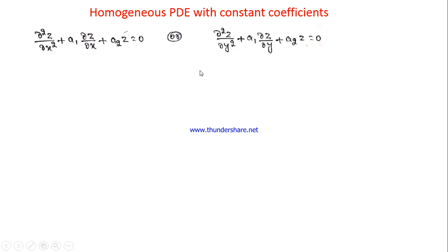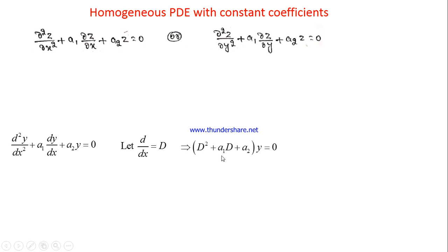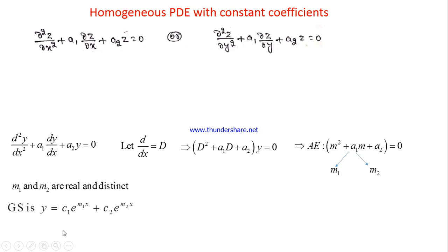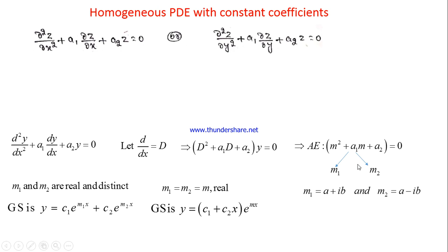Observe these two equations carefully — this PDE looks exactly similar to a second-order homogeneous ODE with constant coefficients, where y is the dependent variable and x is the independent variable. To find the solution, we take d/dx = D, write the auxiliary equation, and find its roots m₁ and m₂. If the roots are real and distinct, we get one form; if real and equal to m, another form; and if the roots are complex, a ± ib, the solution takes the exponential-trigonometric form.